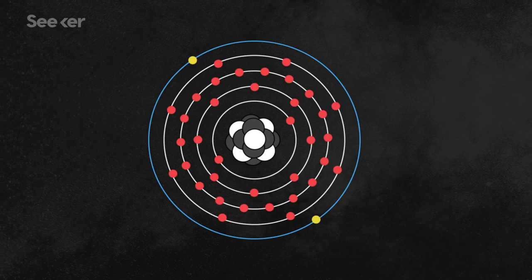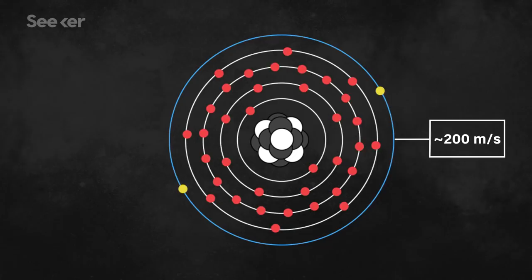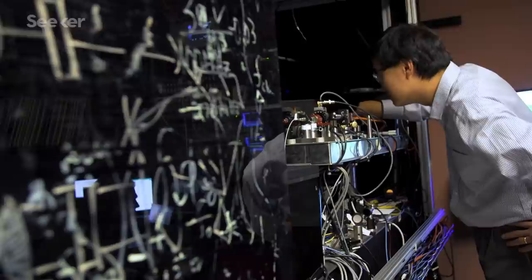The strontium atom, when you liberate it, they are moving with a speed of a few hundred meters per second, which is essentially like a bullet train. And so, if I ask, what time is it, strontium atom? Then I wouldn't be able to tell you the time. So the first thing we need to do is slowing them down, so that they are standing still in front of you. So we need a bunch of lasers.